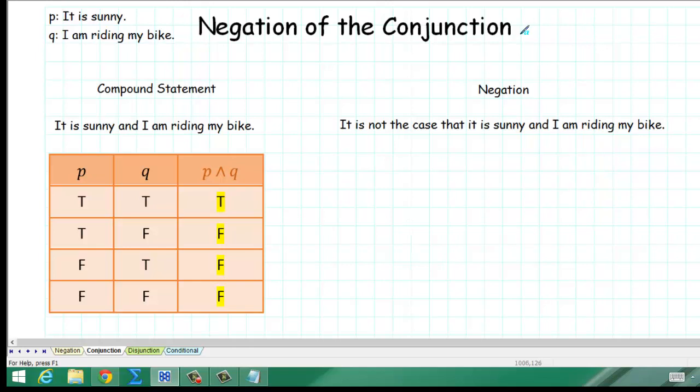Welcome. In this video, we're going to discuss the negation of the conjunction. Let's suppose we have the two simple statements, P, it is sunny, and Q, I am riding my bike.